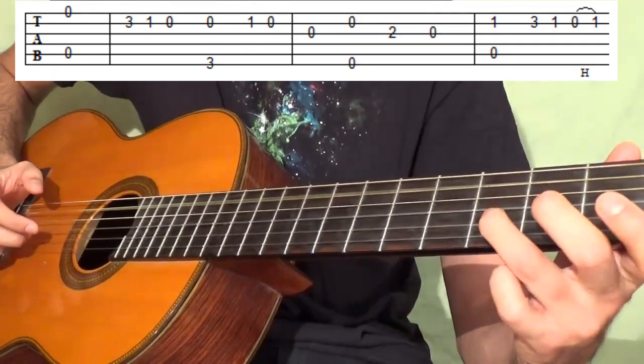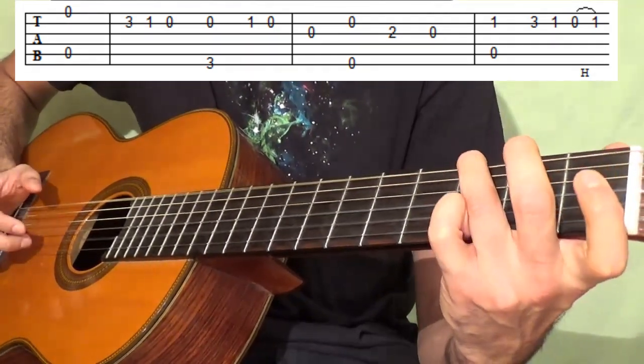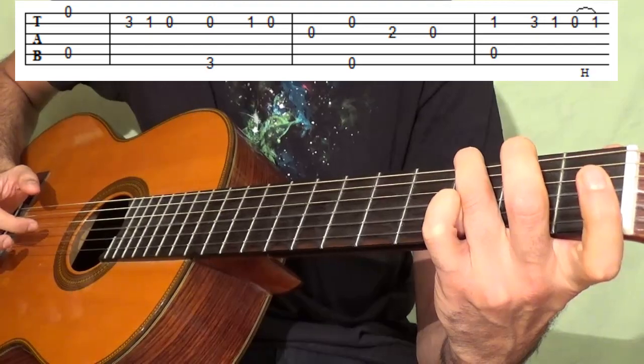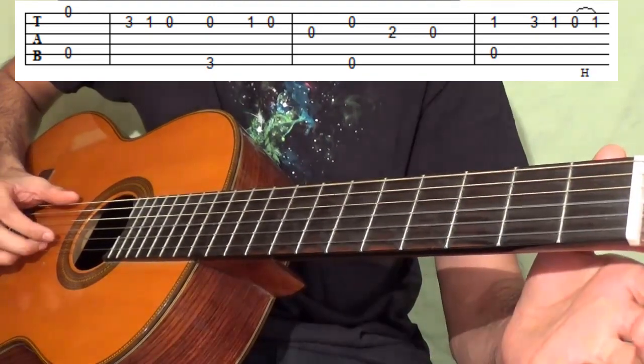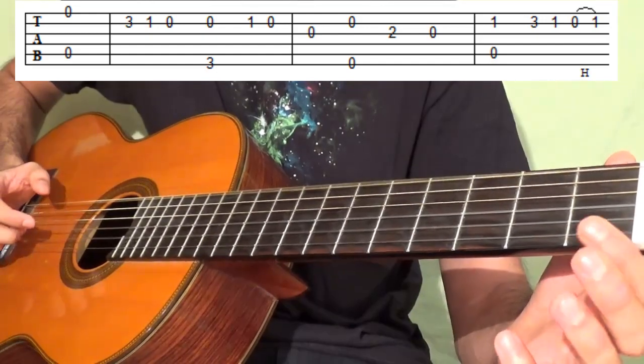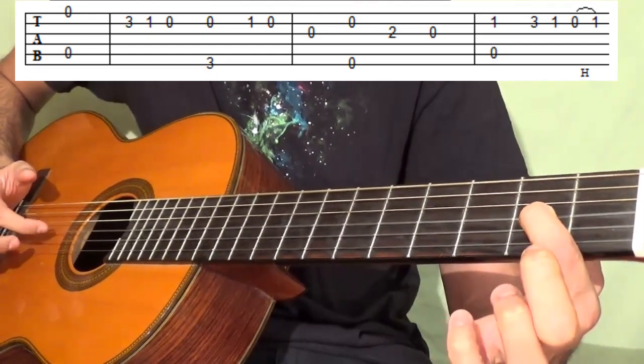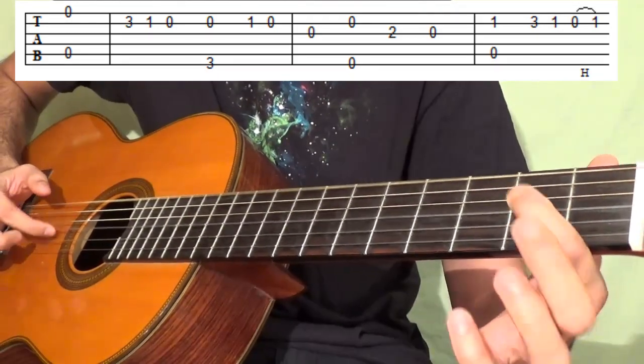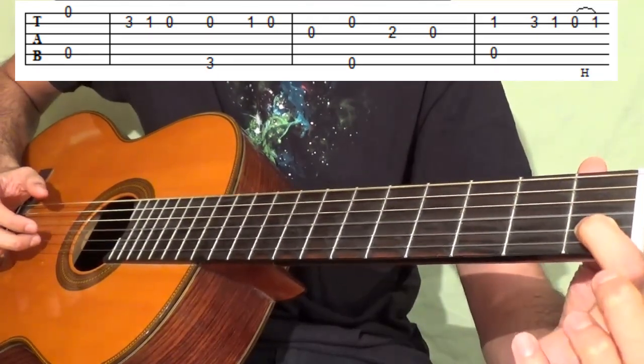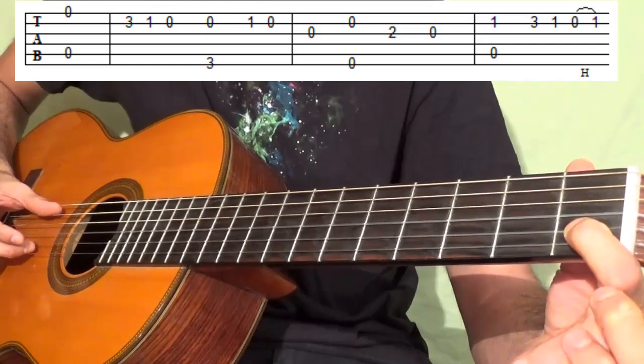Now we're going to play an open E string with an open B string and 2nd fret on G, open G. And then 1st fret on the B string with an open A.